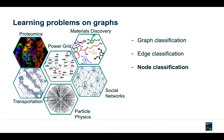With the ubiquity of graphs comes the ubiquity of machine learning problems on graphs. We have problems like graph classification, where we're given a set of graphs and for each graph we want to classify it into one of a few categories. We also have edge classification, where we're given a graph and want to classify each edge. Likewise, we have node classification, where we're given a graph and want to classify each node — with applications in social networks where we might classify each user into one of a few types. In this work I'll mostly focus on node classification, but everything we discuss can be applied to graph and edge classification as well.